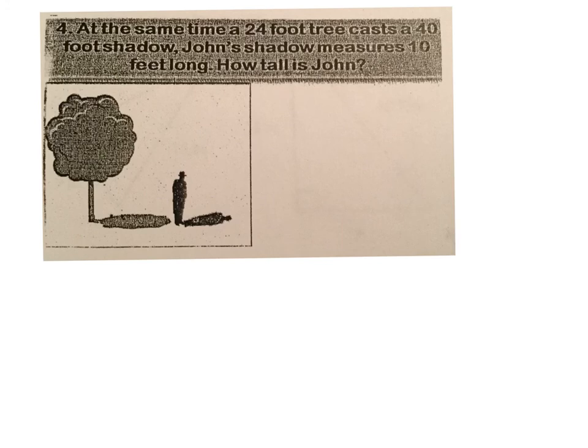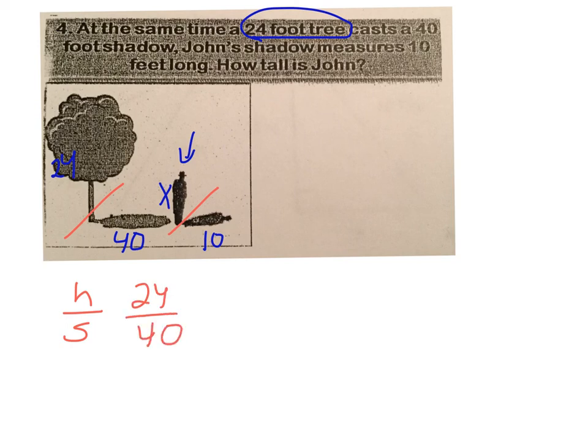All right, we have a picture, but it's not labeled. So let's read along. At the same time, a 24-foot tree. Okay, so let's label 24 foot. Put a 24 along that tree. Cast a shadow that is a 40-foot shadow. So label that shadow. So John, I'm assuming that's John, measures 10 feet. And his shadow is 10 feet. How tall is John? So this is my unknown. Now the great thing about these is this is how you can measure the height of a building. So that's in real life situation. How tall is this tree? I don't have to get out a yardstick and climb up a tree to measure it. You could just measure using the shadows.